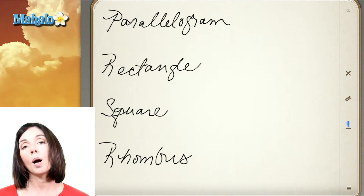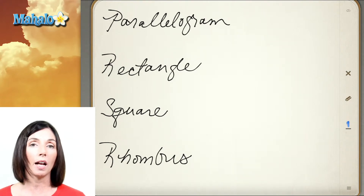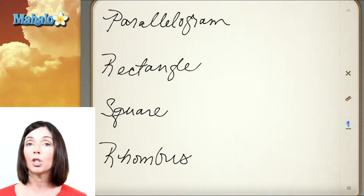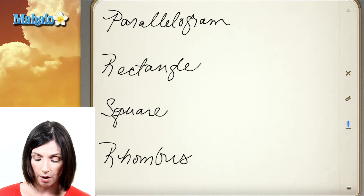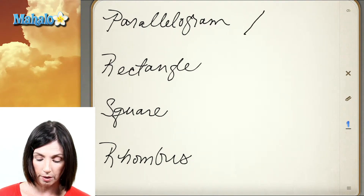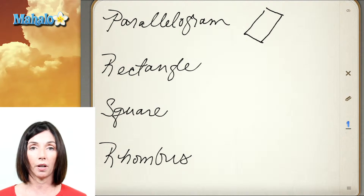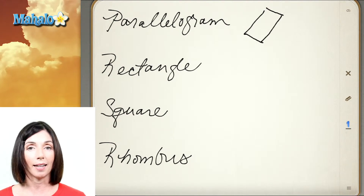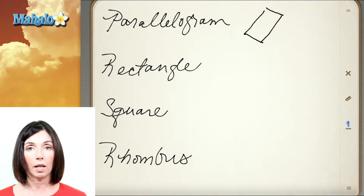A parallelogram is a specific kind of quadrilateral that has two pairs of parallel sides. We would have one pair of sides here that are parallel to each other, and another pair of sides here and here that are also parallel to each other. That's where it gets the name — a parallelogram is still a quadrilateral but it's a special case.